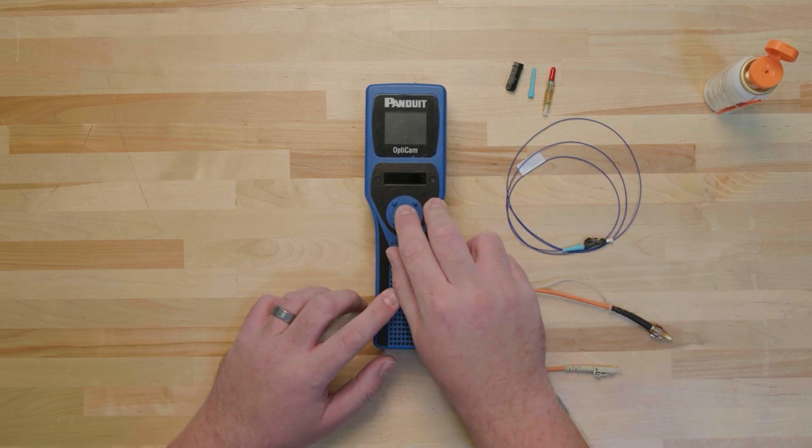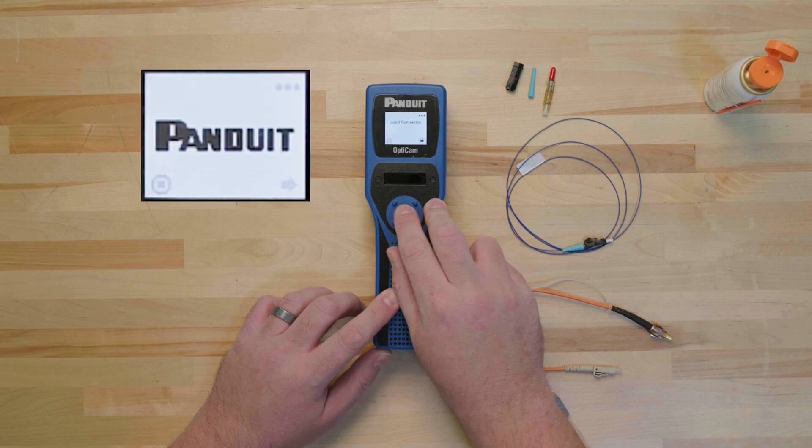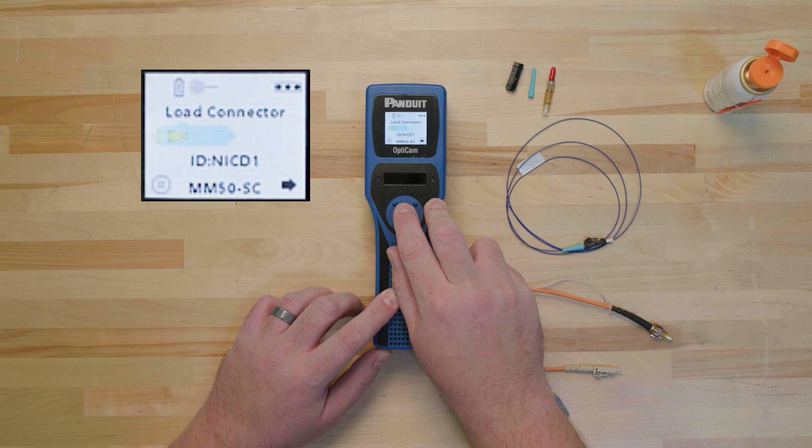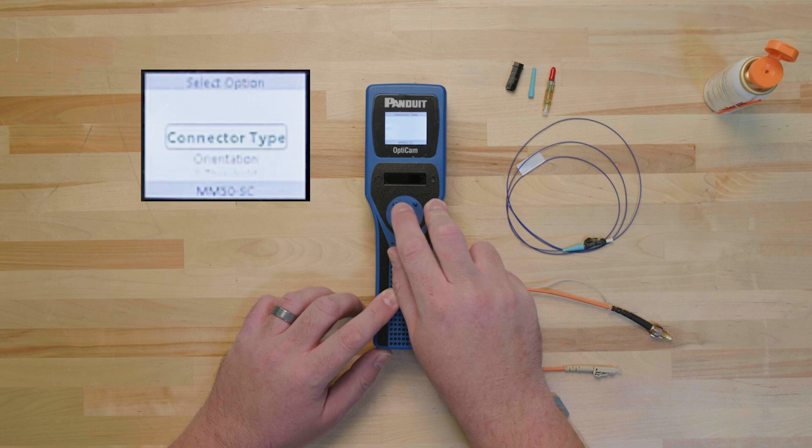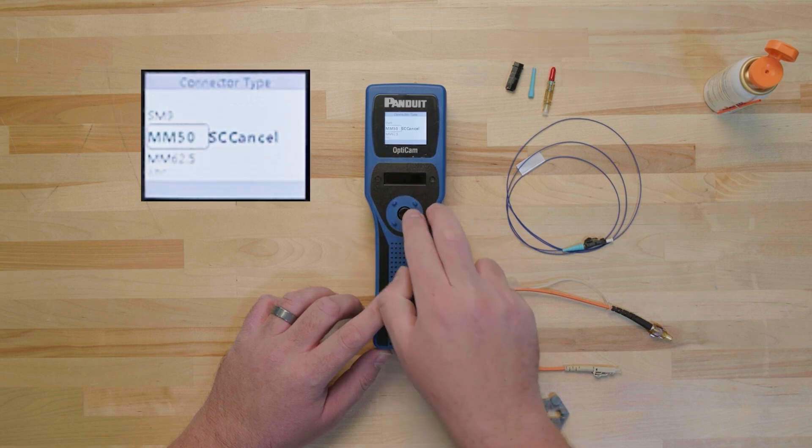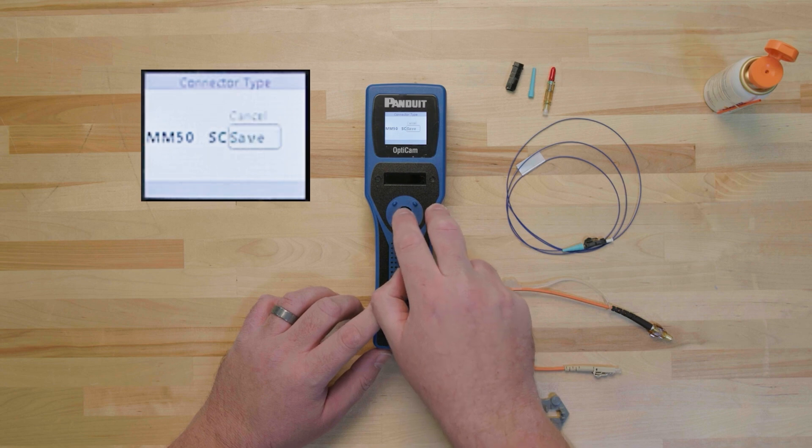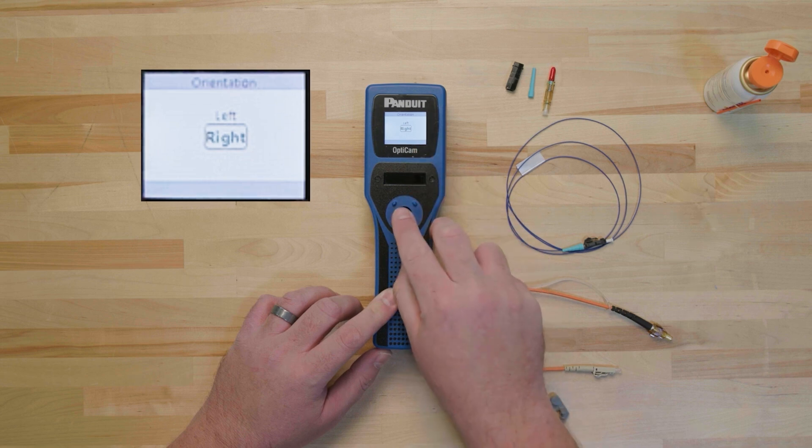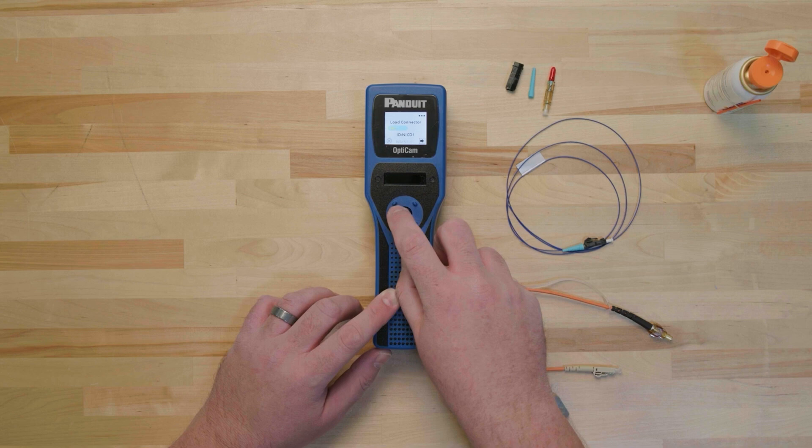Once the tool is clean, we need to make sure the settings on the tool match your connector and desired setup. Push the navigation button on the OptiCam 2 to turn on the screen. Enter the setup mode by clicking on the three-dot ellipses in the top right corner of the screen. Select the correct settings for your desired termination. In this example, the multi-mode 50 and SC in the connector type settings and right in the orientation settings are selected to indicate a 50-micron multi-mode SC connector using a right-handed setup.